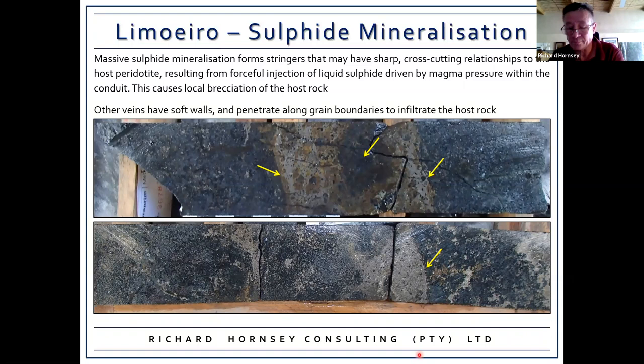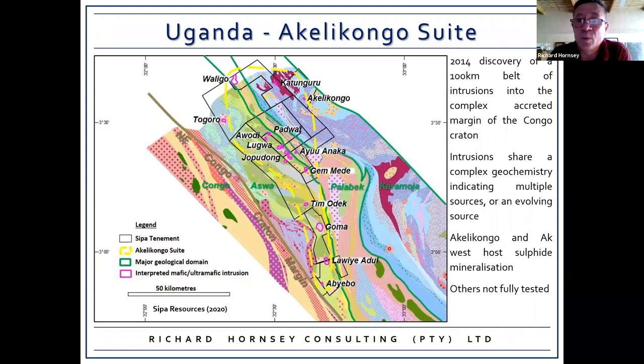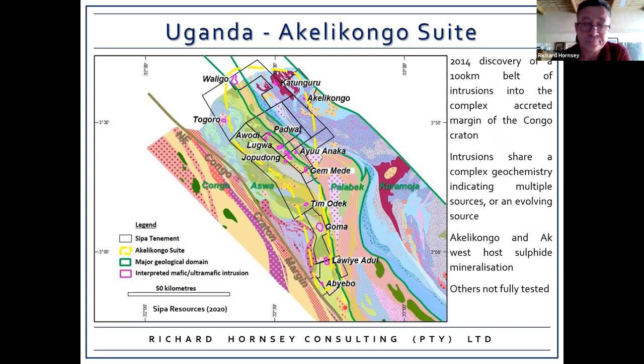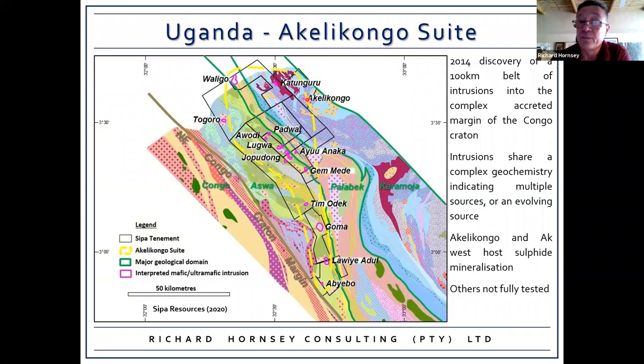Moving to Uganda — northern Uganda near Kikam: during 2012 SEPA Resources entered this part of Uganda looking for zinc in a similar setting to some Australian deposits. They implemented an extensive regional soil sampling campaign and in 2014 discovered the Akali Congo intrusion, which is sulfide mineralized.